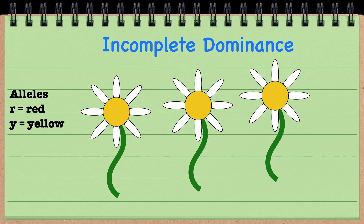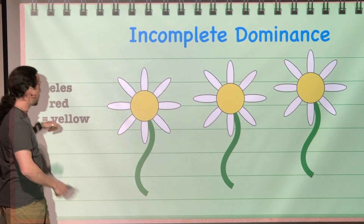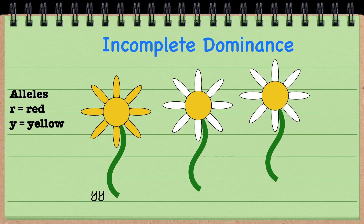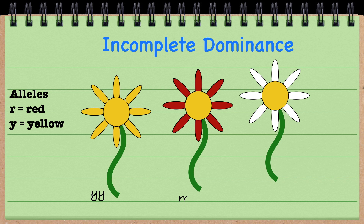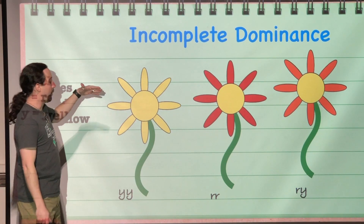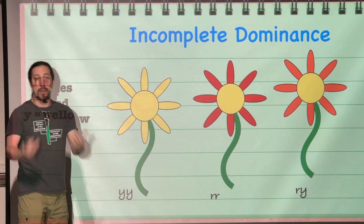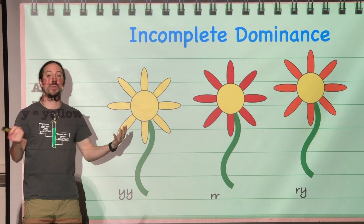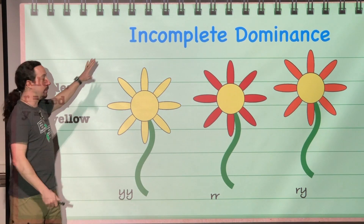To show incomplete dominance, we're going to use alleles for red and yellow. Yellow would have to be homozygous for the yellow allele, and a red flower is homozygous for the red allele. The heterozygous combination would appear orange, where we have both the red allele and the yellow allele mixing together to produce an orange color. That's just one way that incomplete dominance could work.